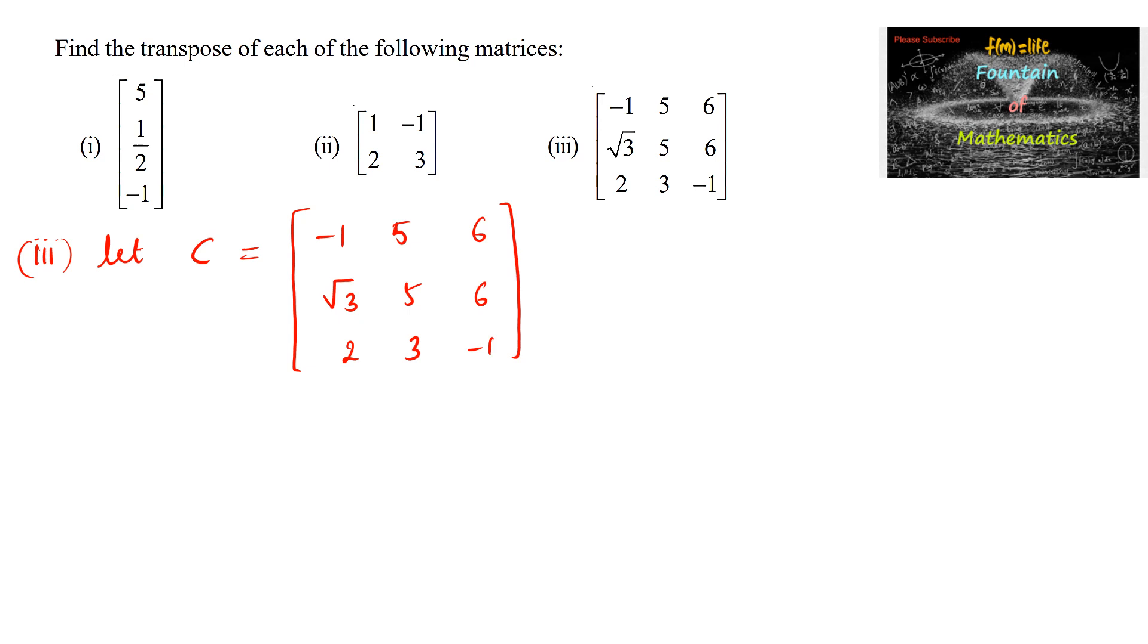Then the transpose of the matrix C transpose is equal to. So here the matrix 3 by 3, so the transpose of the matrix also 3 by 3. First row will change. Otherwise you can just consider the column also. So first column can be changed to the first row.